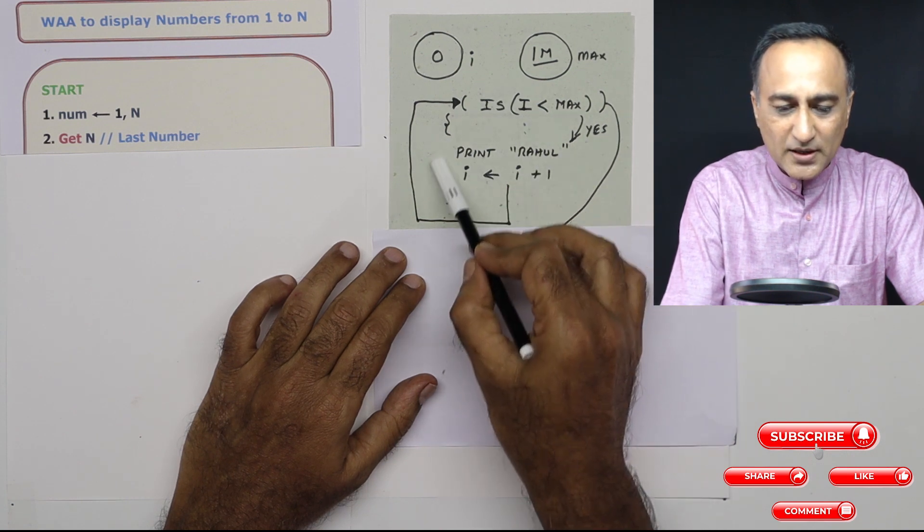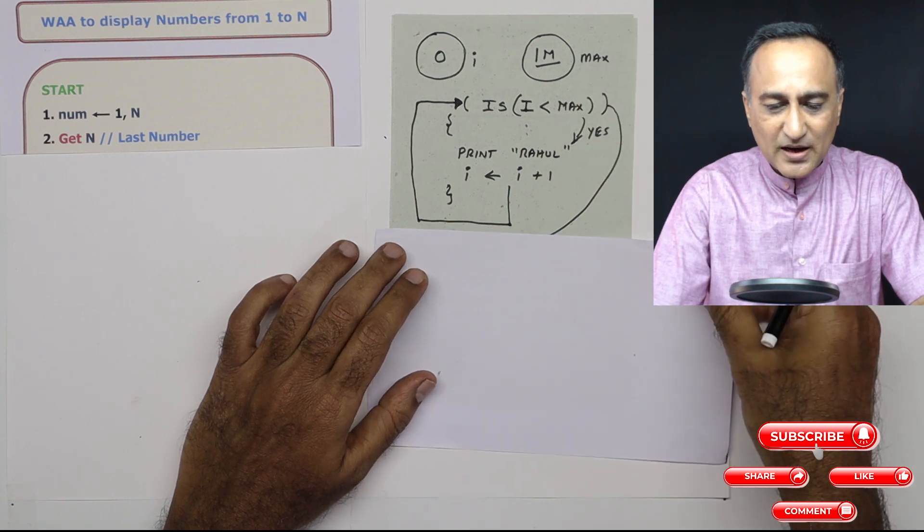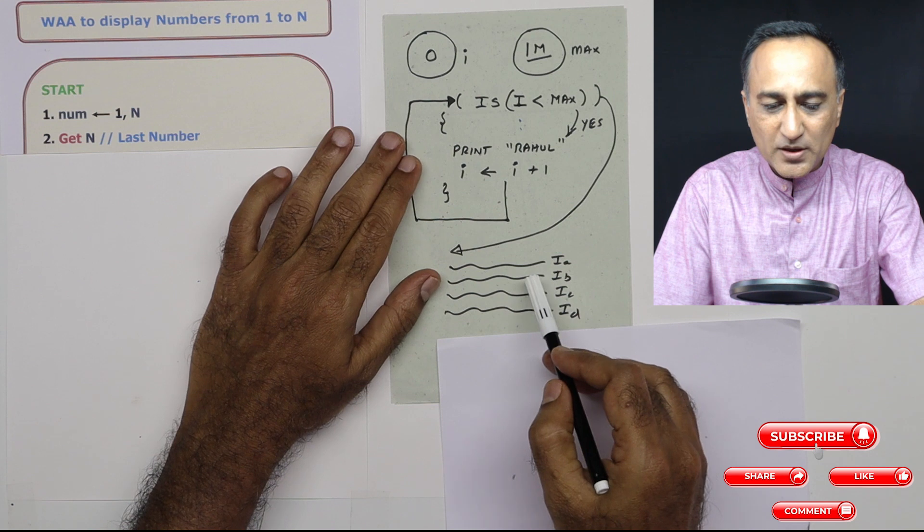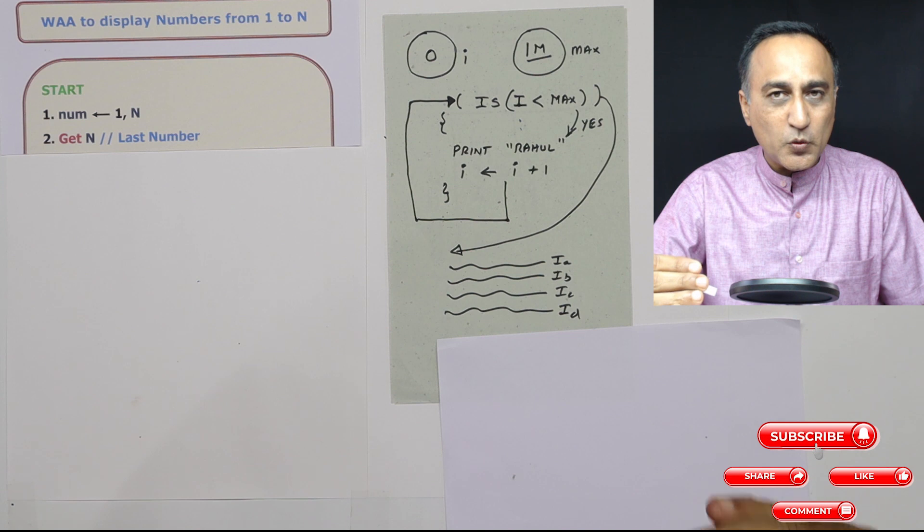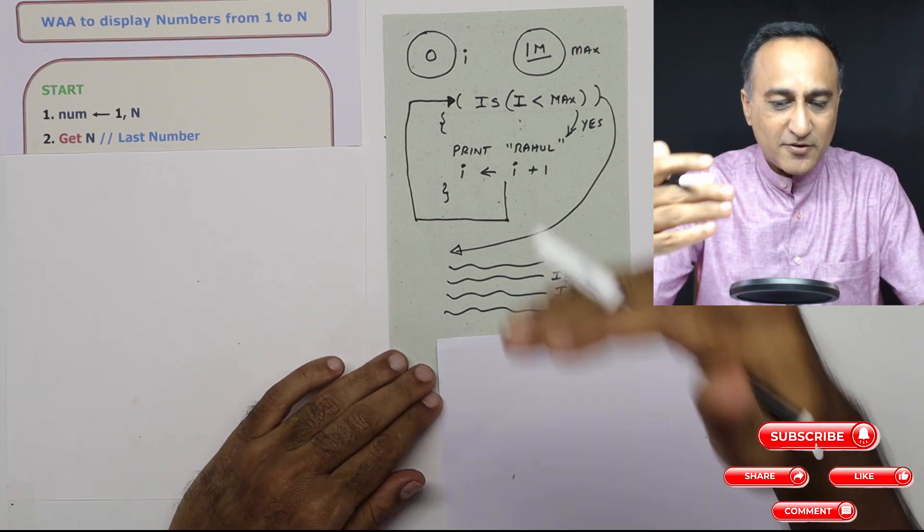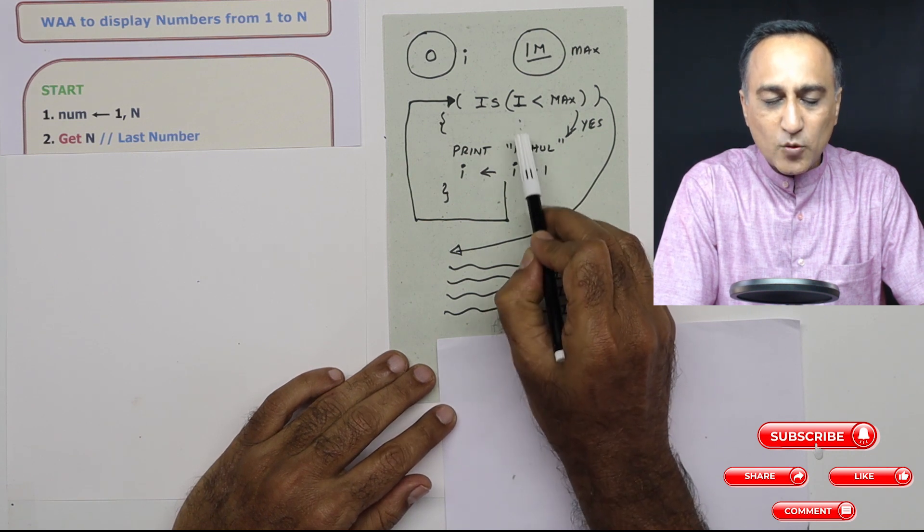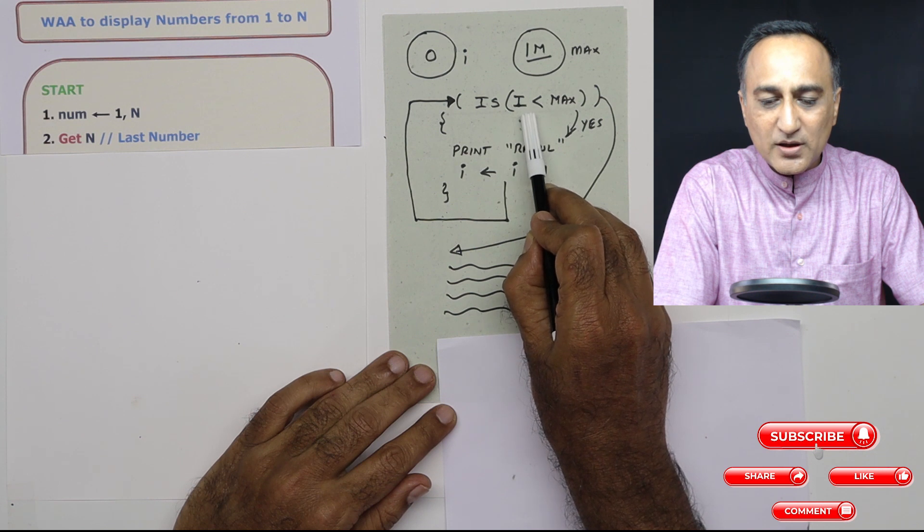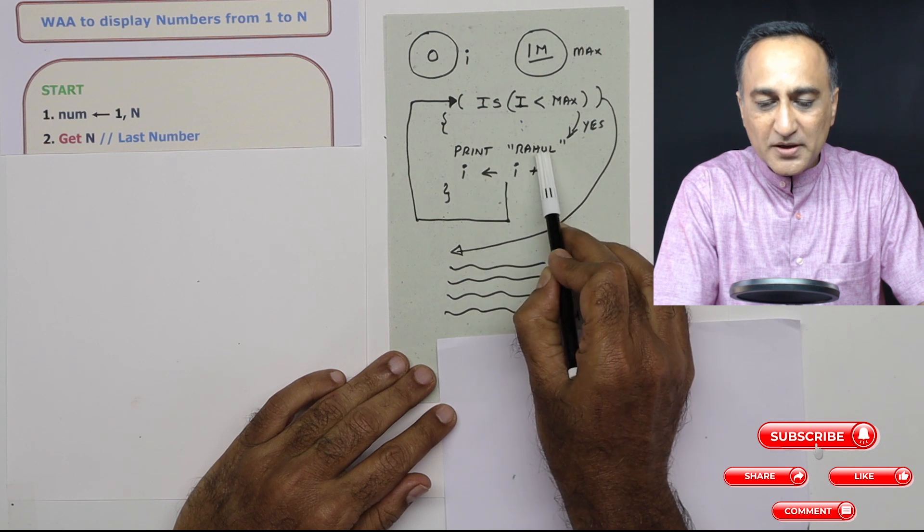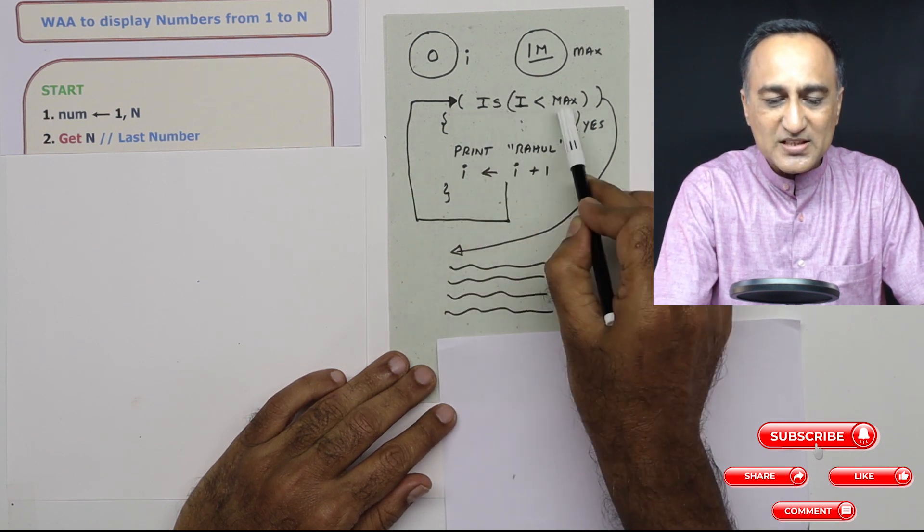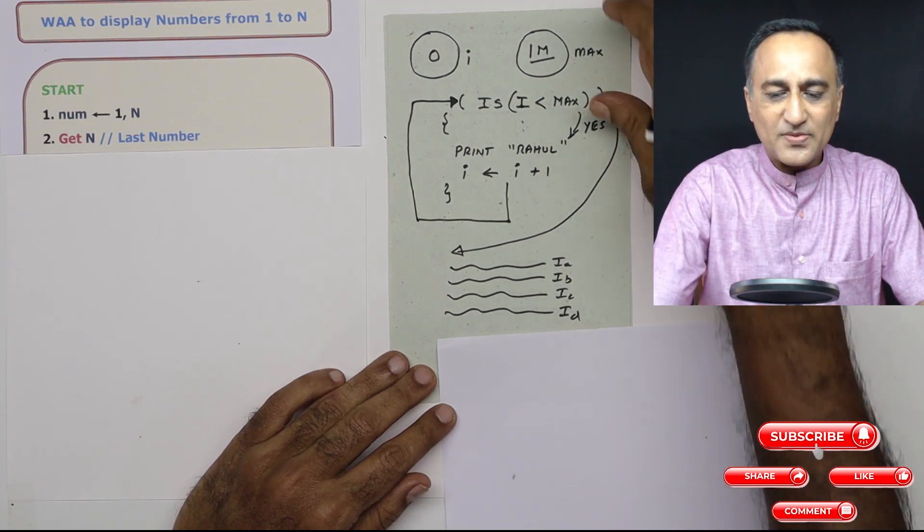If this condition is true, it will keep executing this again and again. The minute it is false, I am going to come here and continue to execute certain other statements. So this should give you an idea how I am doing a looping or a repetition process. The very first thing I do is I ask myself how many times I want to print Rahul. I want to print Rahul as long as my counter, which in this case happens to be I, is less than max. Then I am going to print the name, I am going to increase the counter, keep doing this till this particular condition fails. After that, keep doing these set of instructions.